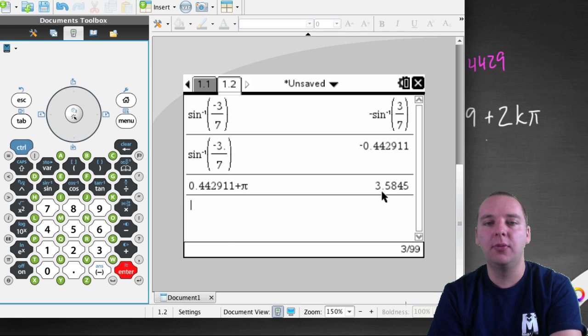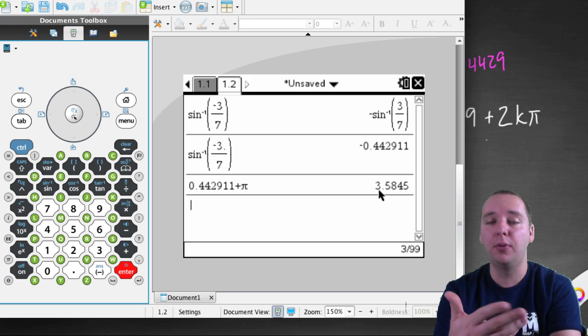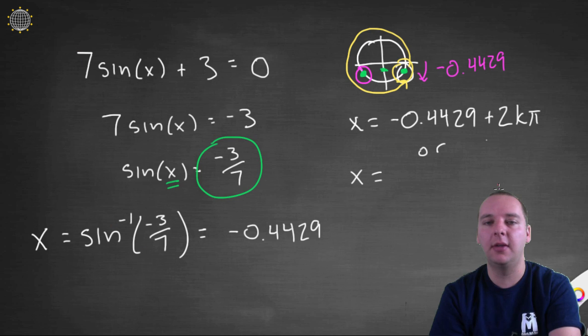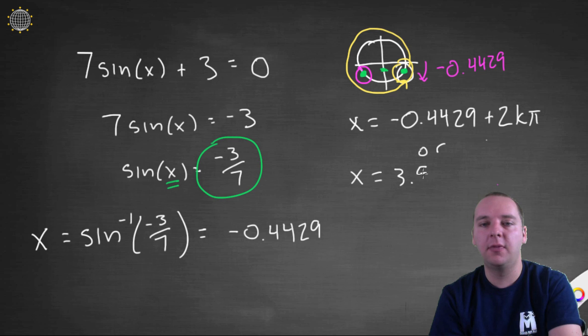And that'll be 3.5845. That's a little larger than pi. 3.14 would be pi. 3.5845. That's this radian angle.